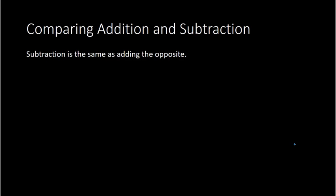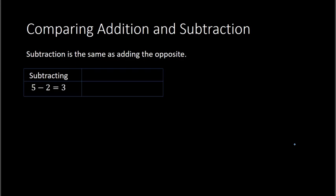Subtraction is simply adding the opposite. So for example, if you had 5 minus 2, which obviously equals 3, that is the same thing as thinking of it as adding the opposite, which would be 5 plus a negative 2. So you're adding the opposite of 2, which is negative 2.